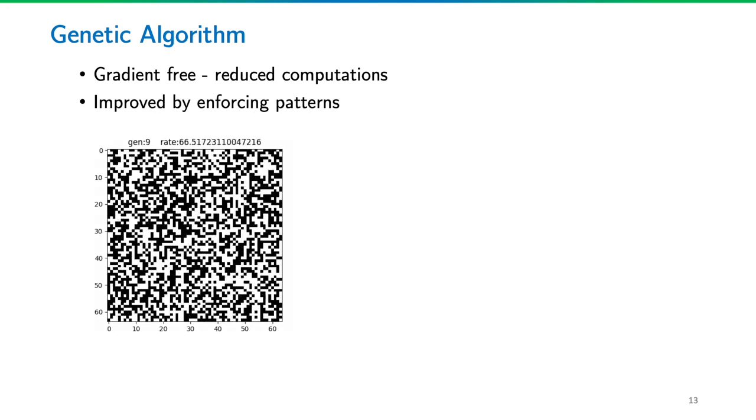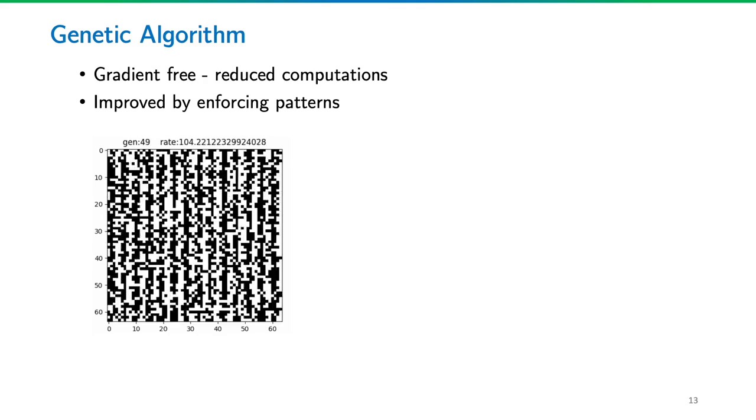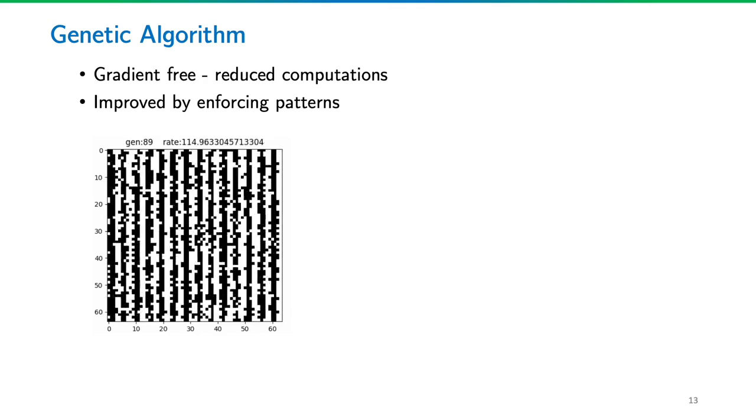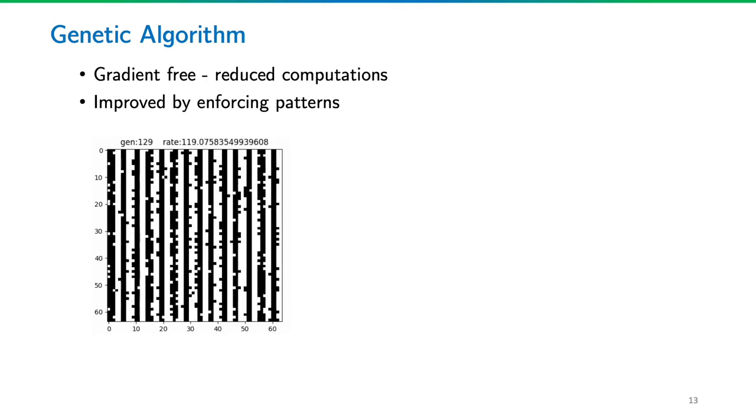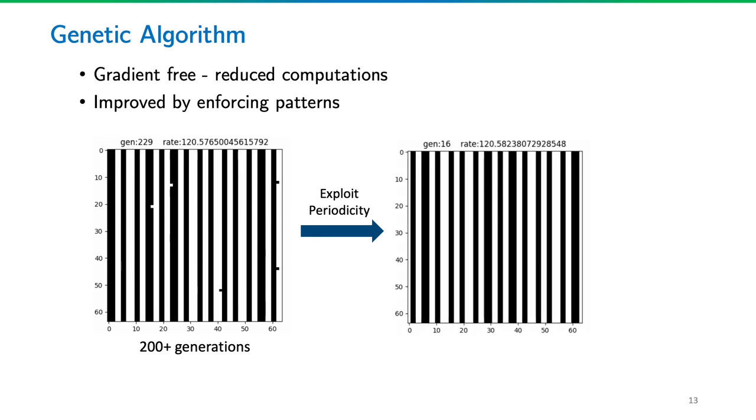This takes less resources than the gradient method. We inferred that vertical strip patterns give higher data rates. Therefore, instead of naive implementation of mutating each element, we can enforce a periodicity to the final configuration. This resulted in reaching 99% of our overall highest data rate in the competition in 1.3 seconds on a Raspberry Pi 4, as we showed in our simulation before.